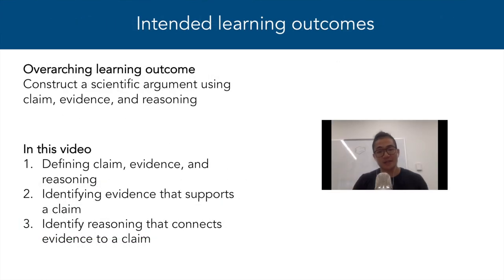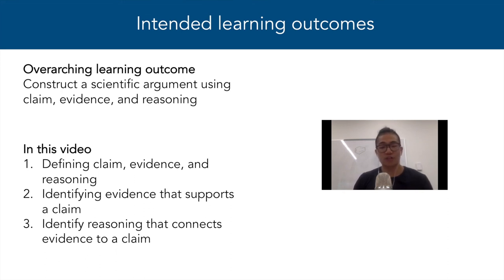Let's summarize what we did today. In this video, you learned how to construct a scientific argument, which included identifying the claim, evidence, and reasoning within some arguments, and you had practice deciding on appropriate evidence and reasoning for chemistry questions. Remember, the ability to think about and construct arguments in terms of claim, evidence, and reasoning is not just going to be helpful on exams and lab reports — it's also going to be helpful as you make decisions in your life using scientific evidence. If you want more practice, you'll find a worksheet in the description. See you next time.